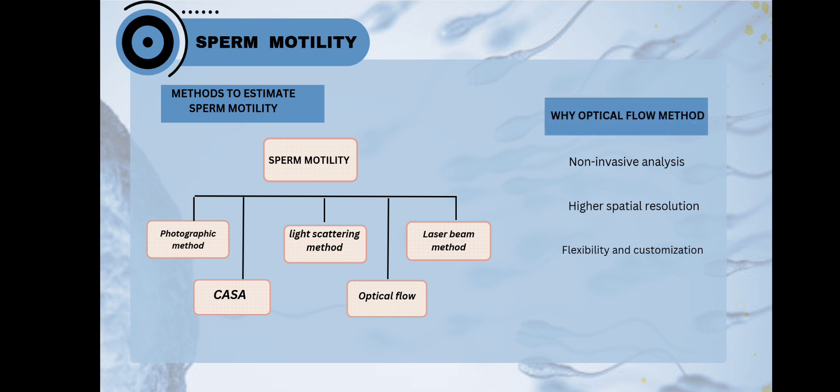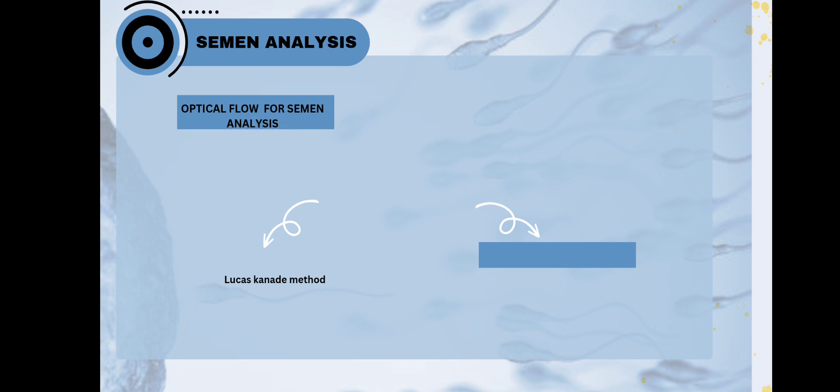Why optical flow? Optical flow has many advantages over the CASA method. First, it gives us non-invasive analysis, meaning the video captured, we don't have to analyze the sperm cells at present. We can analyze at any time. Second, higher spatial resolution. Optical flow provides high resolution power to determine each and every point of the sperm cells. Next, flexibility and customization. We can use this sperm cell analysis by optical flow at any condition, any place because it provides defined data. So, we use Python codes to determine the semen analysis by optical flow.